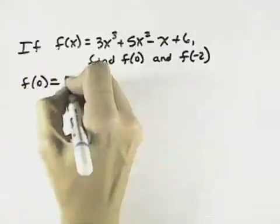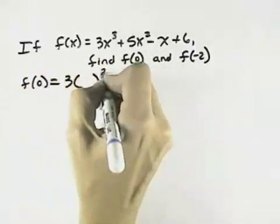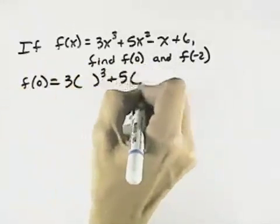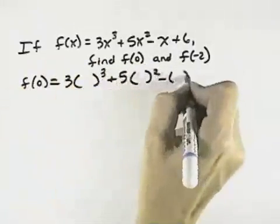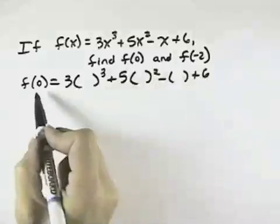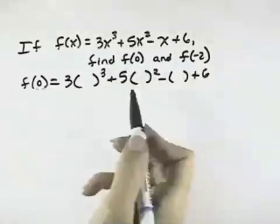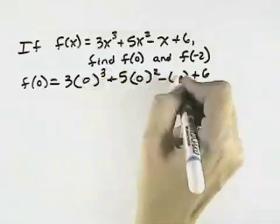We'll start with f of 0. What that means is write down your function f, but take out all your x's. Leave everything else the way it is. Just remove the x's, because what we want is to evaluate it when x equals 0. So where each of the x's was, we replace it with a 0.